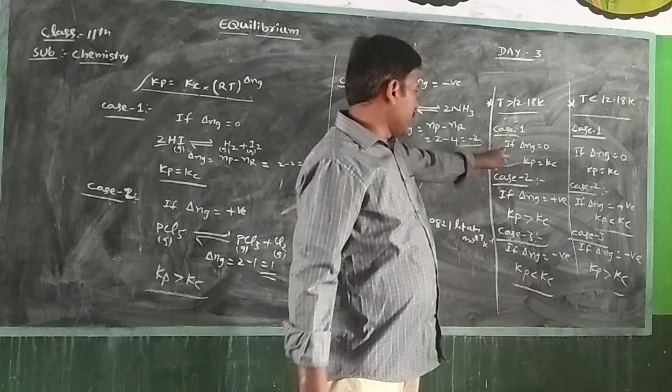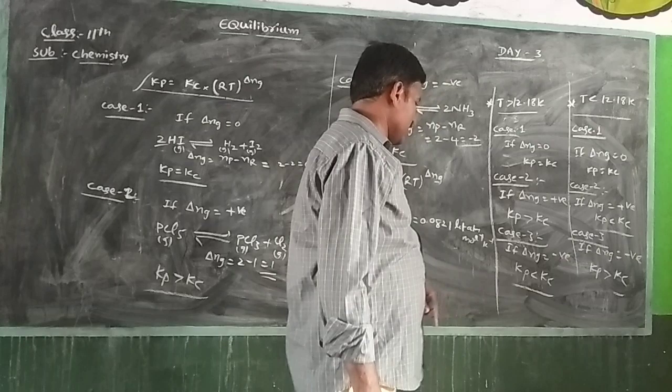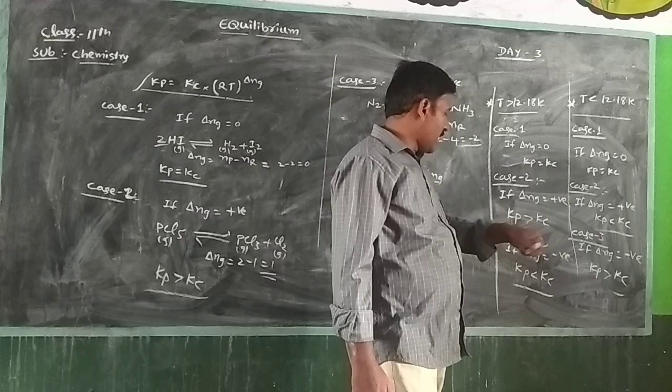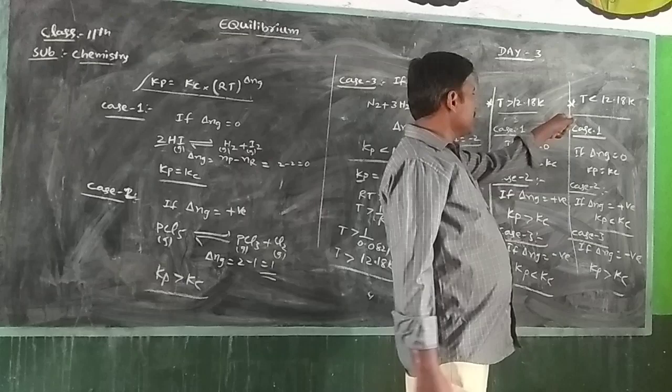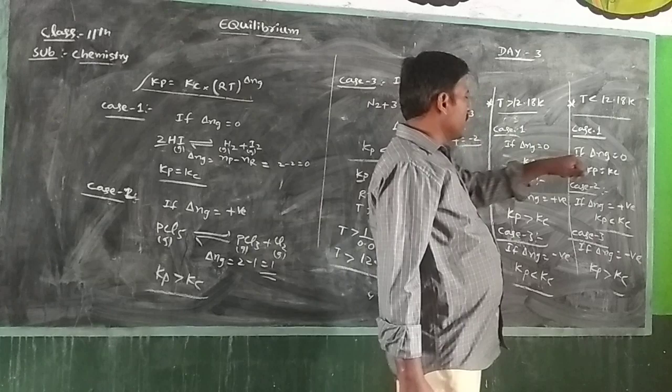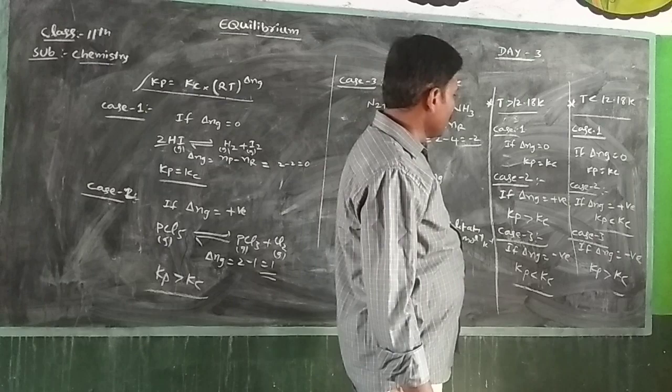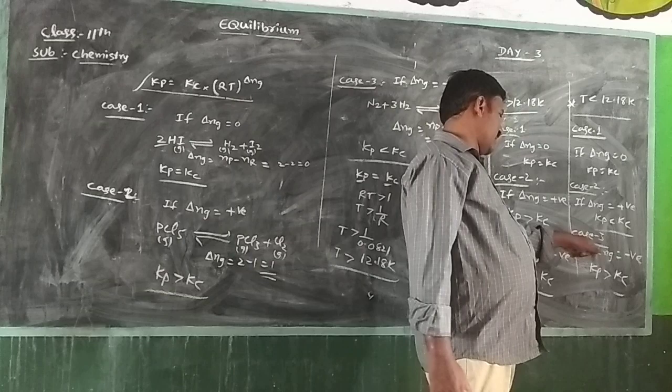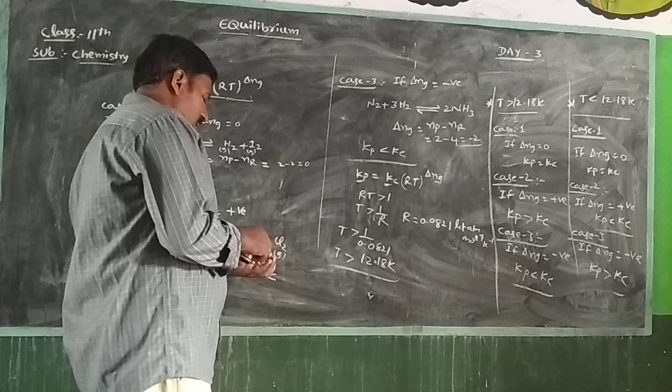Above 12.18 K: ΔNg = 0 → Kp = Kc; ΔNg positive → Kp > Kc; ΔNg negative → Kp < Kc. Below 12.18 K: ΔNg = 0 → Kp = Kc; ΔNg positive → Kp < Kc; ΔNg negative → Kp > Kc.